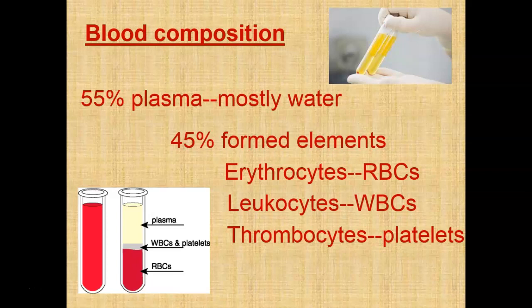This is a normal blood sample. This layered result is known as your hematocrit. If you become dehydrated, you lose plasma — you have less water — so a higher percentage of your hematocrit would be cells rather than liquid. Your erythrocytes are normally about 45%; if you're dehydrated, your hematocrit goes up because you have less liquid.